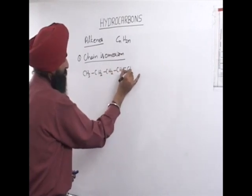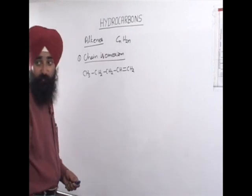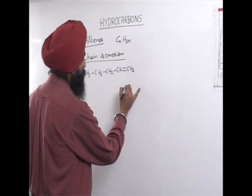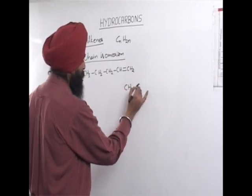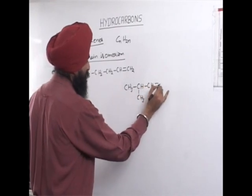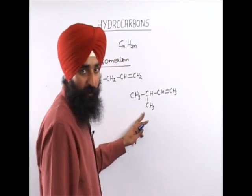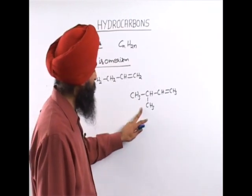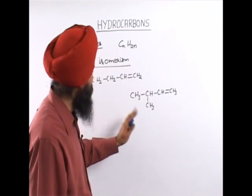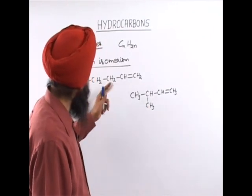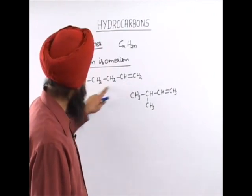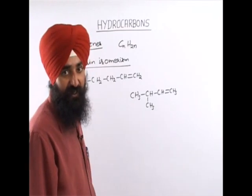For example, this is pent-1-ene, and its chain isomer will be one in which we change the carbon-carbon chain. It will be called isopentene commonly, and its IUPAC name will be 3-methyl-but-1-ene. The difference between these two is only the carbon-carbon chain — one has a straight chain and the other has a branched chain.